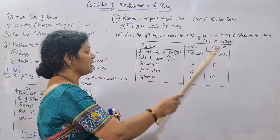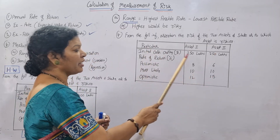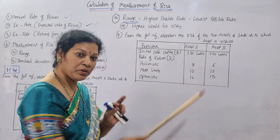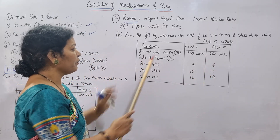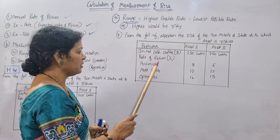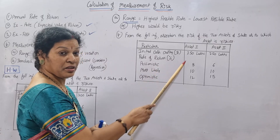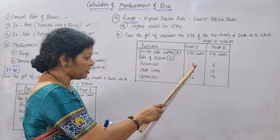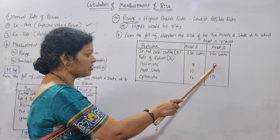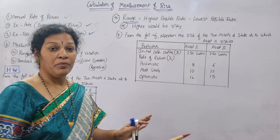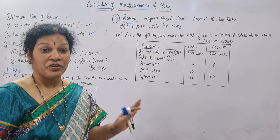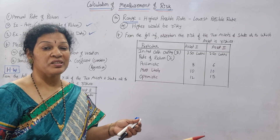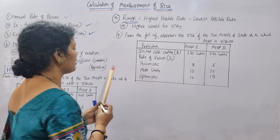Looking at the data: particulars are given for Asset 1 and Asset 2. The initial cash outlay is two lakh fifty thousand for both assets. The rate of return is given for three periods — pessimistic, most likely, and optimistic. The expected rate of return in percentage for Asset 1 is 8%, 10%, and 12%, and for Asset 2 it is 6%, 10%, and 15%.